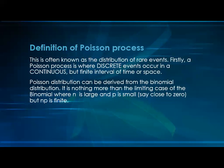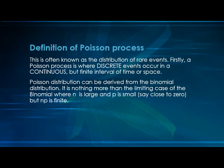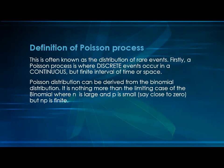Poisson distribution can be derived from the binomial distribution, which we already saw. It contains the main parameters n, the number of trials, and x, the number of successes we expect. Here it is the limiting case of the binomial distribution where n is large — the number of trials is infinite — and p is small, so the probability of success is very close to zero, but n times p remains finite.